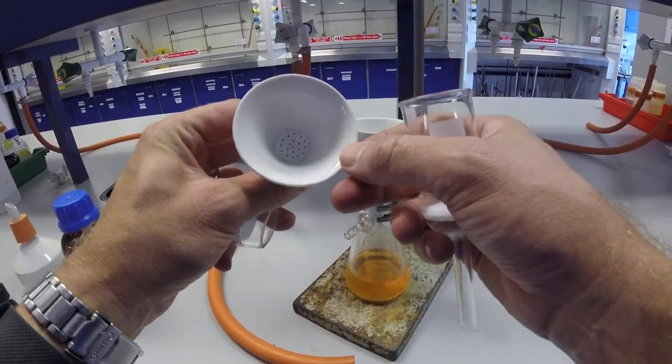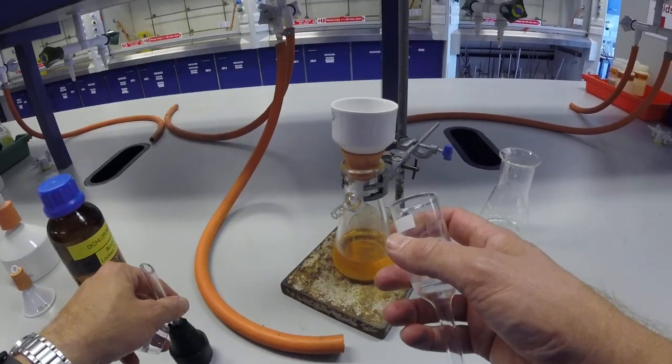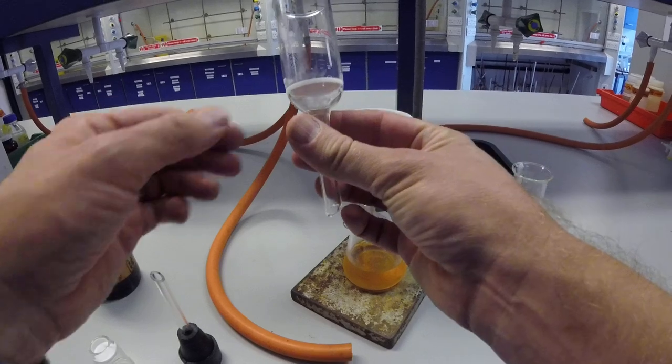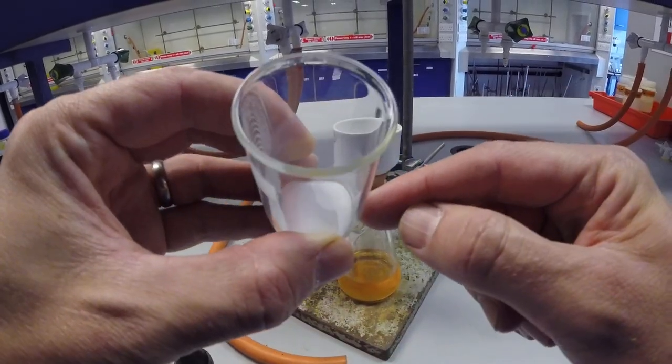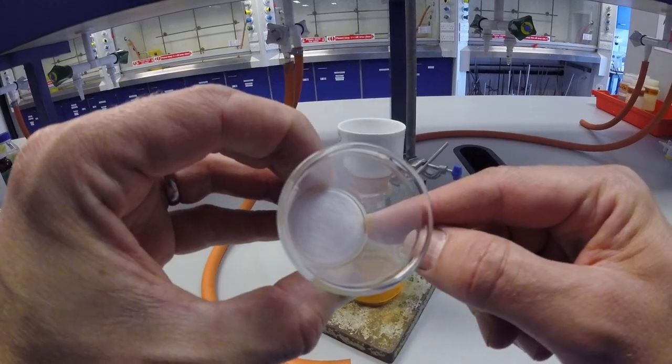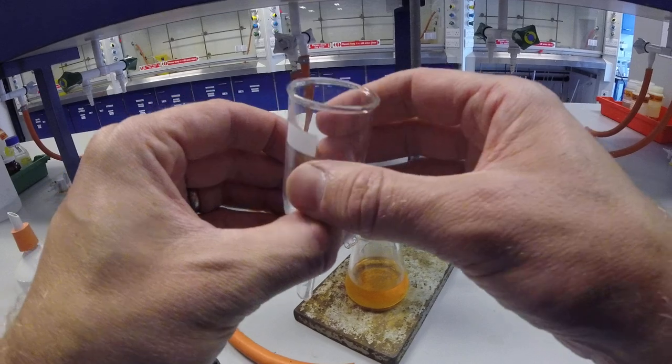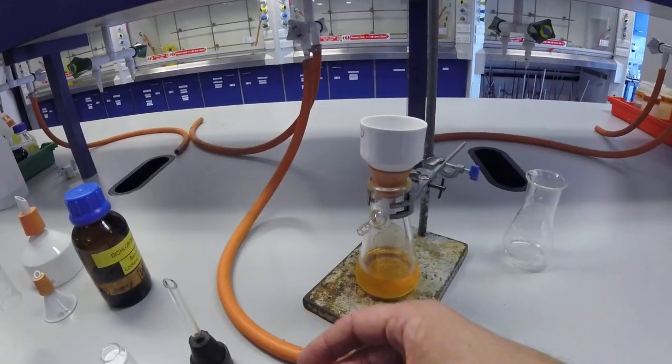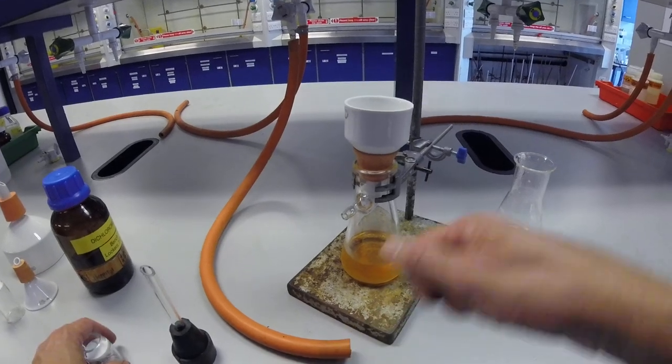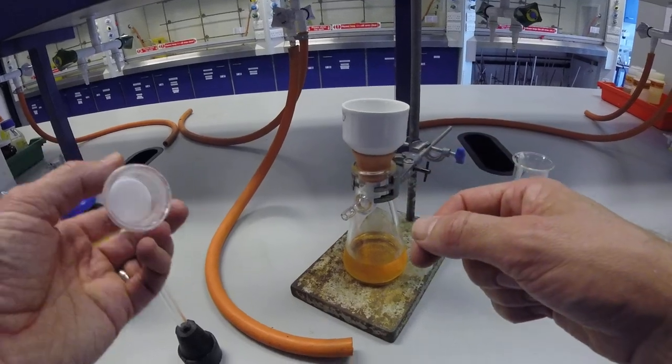Or you may use one of two forms of sintered glass funnels. So a sintered glass funnel has a very finely divided porous glass surface inside, so it's solid but you're able to filter through it. And these are particularly useful, particularly if it's a very fine solid, because you can scrape the surface with a spatula without causing any damage.